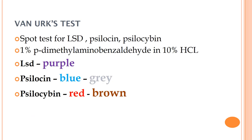The Van Urk test is a spot test or bedside test used to differentiate LSD from psilocybin ingestion. The reagent used is 1% dimethylaminobenzaldehyde in 10% hydrochloric acid. This reagent is applied to the suspected substance and a color change is observed: if the color change is purple, it indicates LSD; if blue to gray, it indicates psilocybin; and if red or brown, it indicates a psilocybin product.